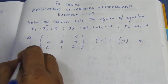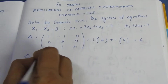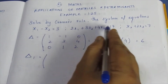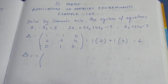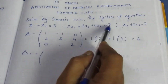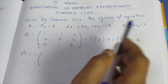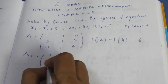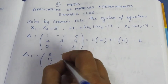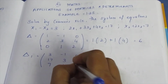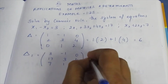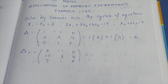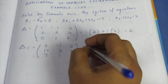Next, find determinant D1. What is determinant D1? The first column is replaced by the constants. The first column elements are 3, 17, 7. So D1 has first column 3, 17, 7, and remaining entries minus 1, 3, 1, 0, 4, 2. This is Cramer's rule. Find determinants D1, D2, and D3.